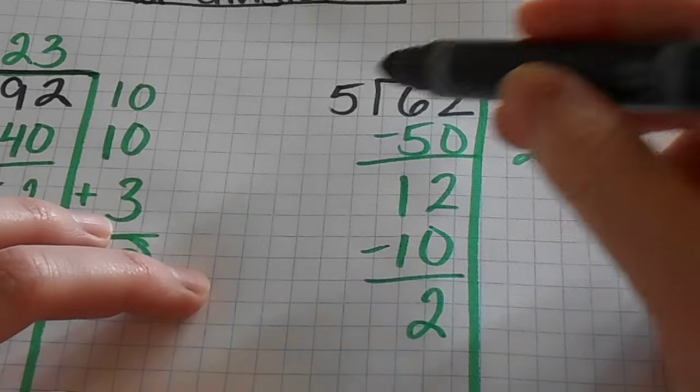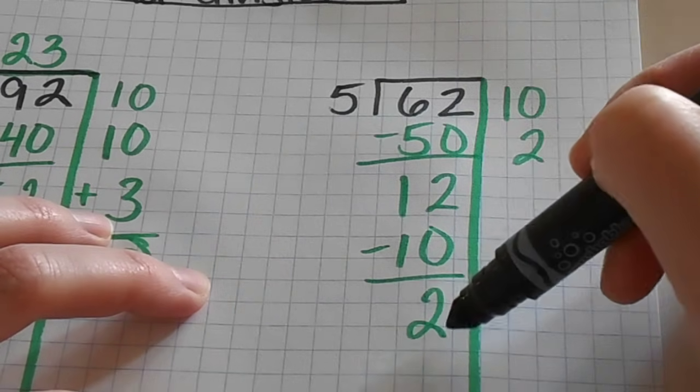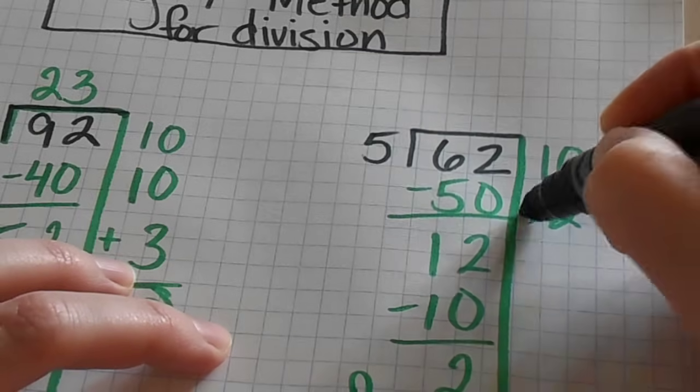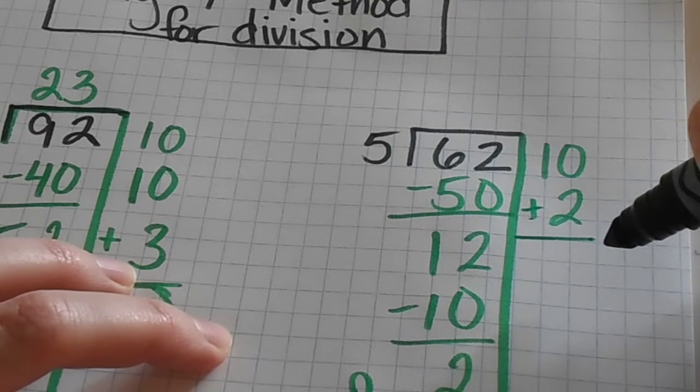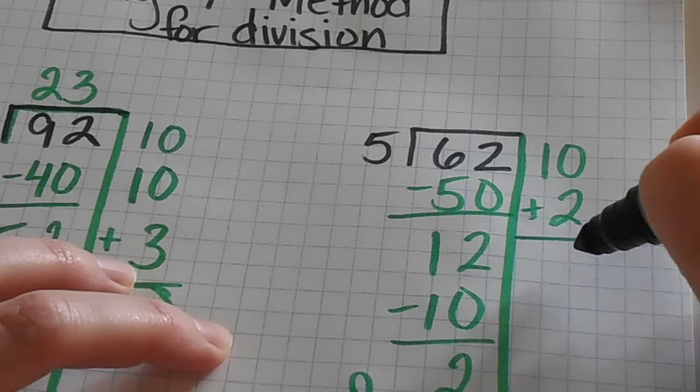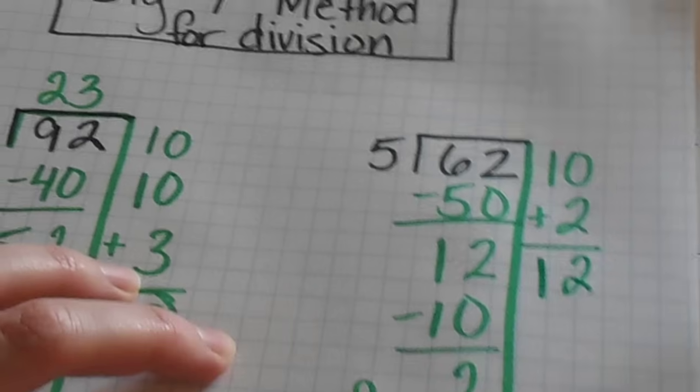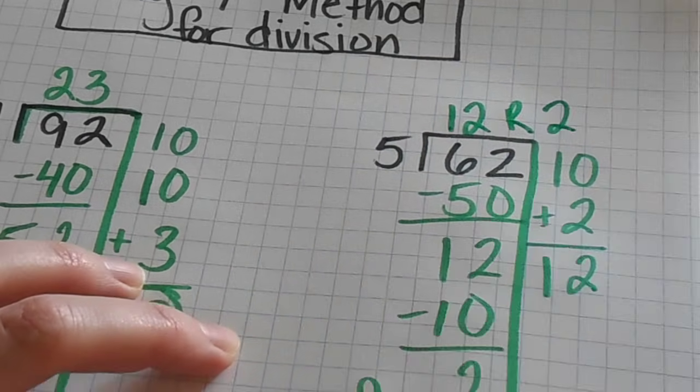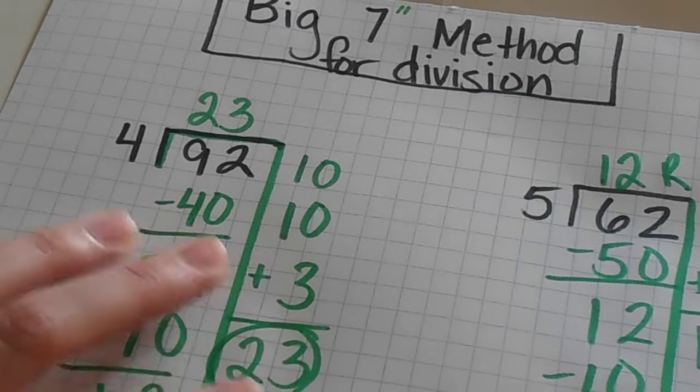Since this number is smaller than my five, I cannot take out any more fives from this number. So now this becomes my remainder. Add up how many groups of five I took out of 62. So I'm left with 12 with a remainder of two. And that's how you do the big seven method for division.